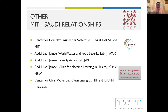The Ibn Khaldun program is just one of the collaborations between MIT and the Kingdom. The slide shows a few other programs: the Center for Complex Engineering Systems, between MIT and CACST; the Abdul Latif Jamil World Water and Food Security Lab; a program on poverty and action; and a clinic for machine learning and health — all under the umbrella of Abdul Latif Jamil. Before that, we had the Clean Water and Clean Energy Center between MIT and KFUPM.